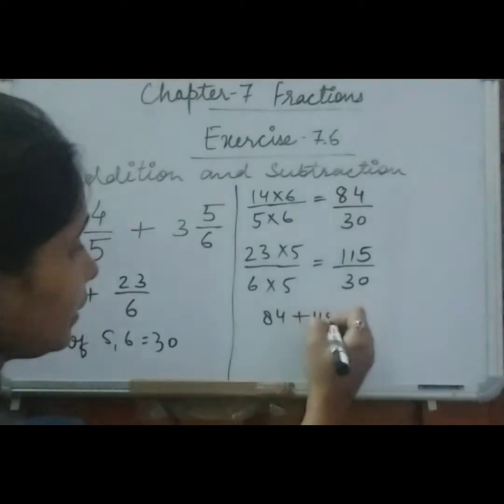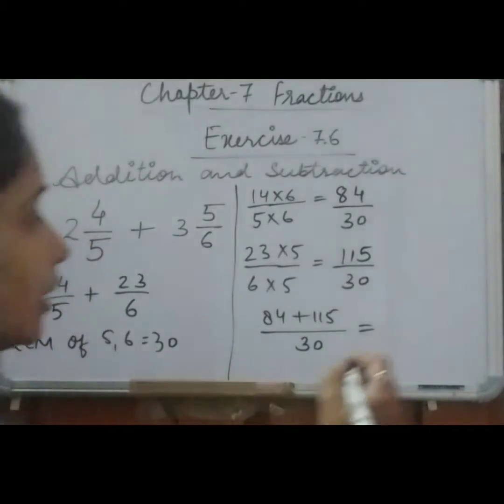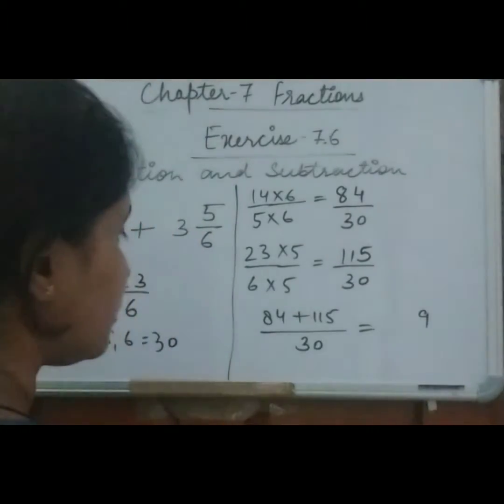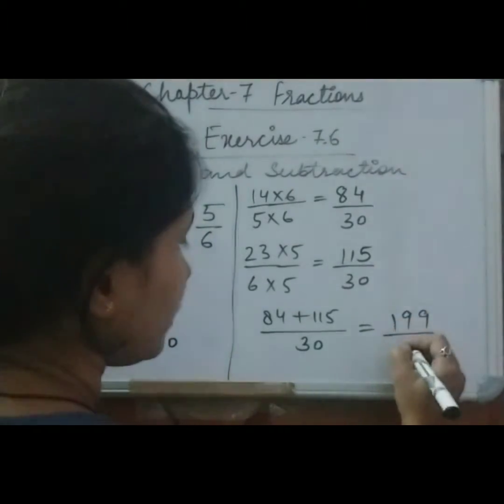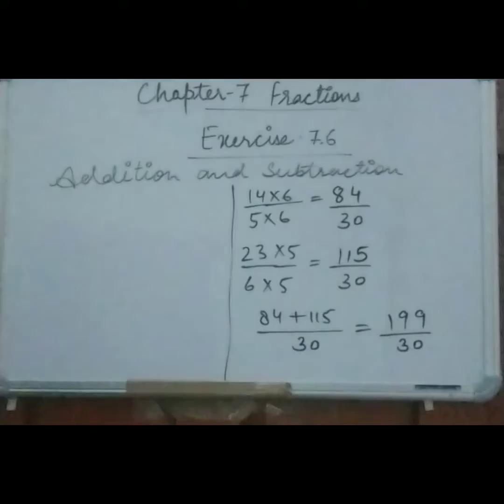Now we will add them. 84 plus 115 upon 30. Now solve them. It is 199. So this is the answer. But here, listen, question is given in mixed fractions, so make this one also mixed fraction.